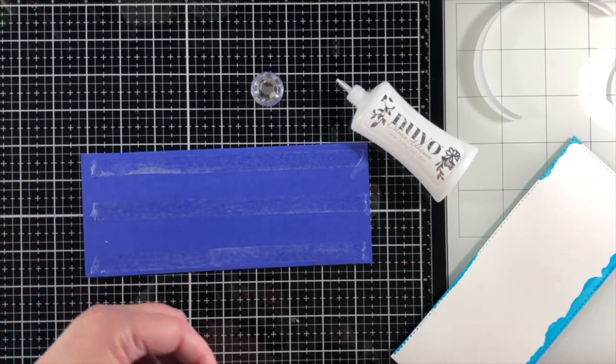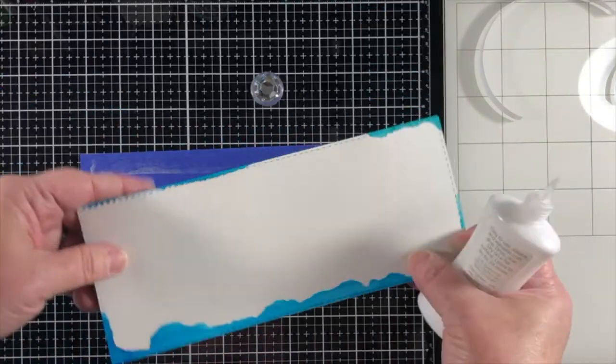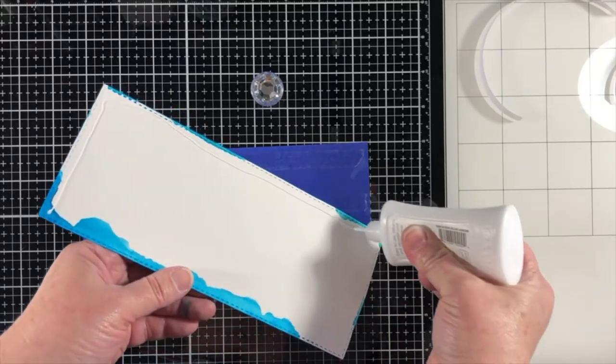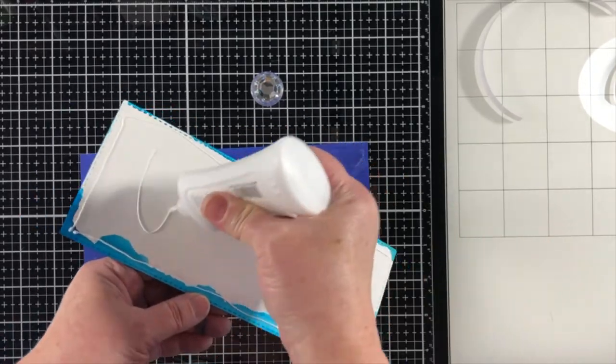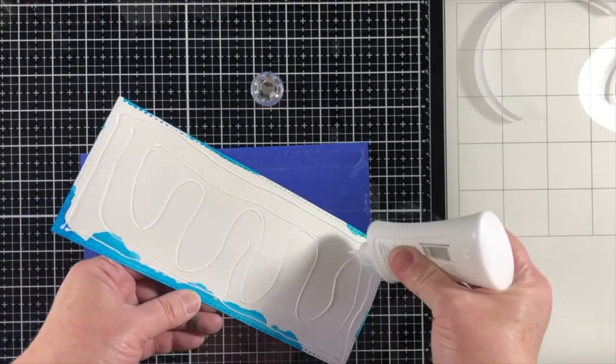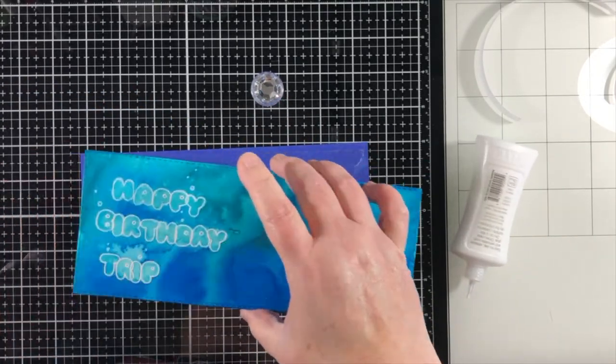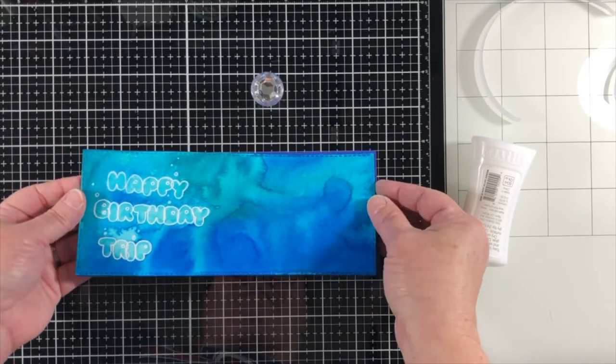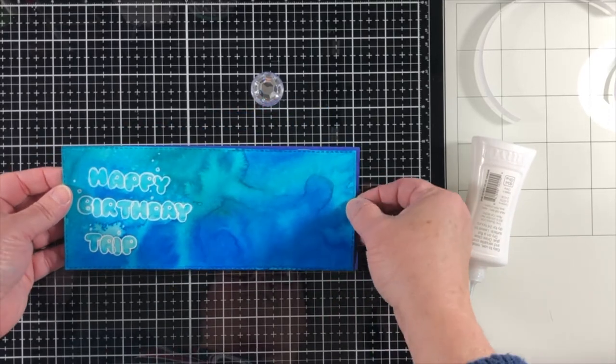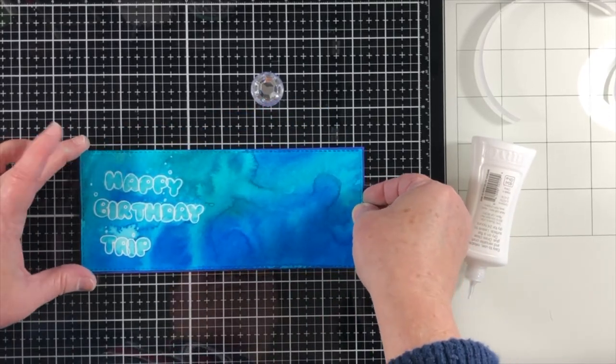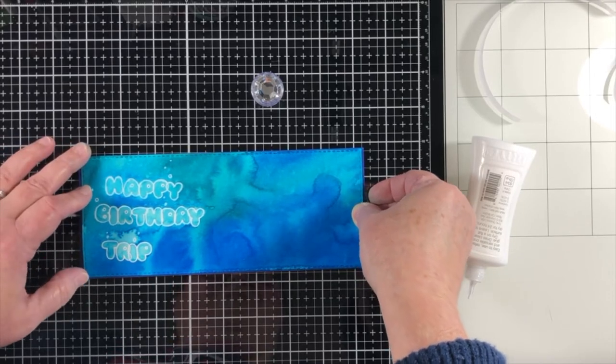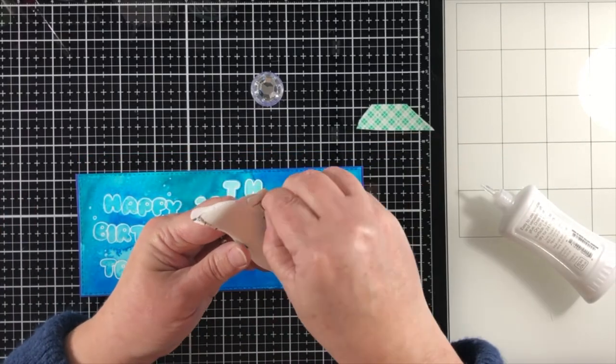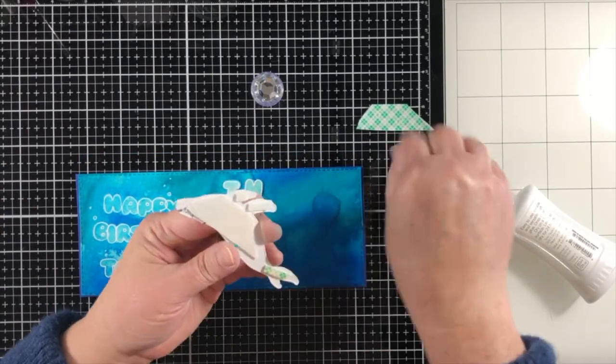So I'm going to adhere this panel down to a piece of blue cardstock that I've made into my card base. And this is a slimline card that will measure eight and a half by three and a half inches. And I'm adding some strong adhesive to the card base and then liquid glue to the back of the watercolor paper. And the reason is because the panel cut out just slightly smaller than my card base. And I wanted there to be that liquid glue ability to just wiggle it a little bit and get it into just the right spot. And that worked out perfectly.